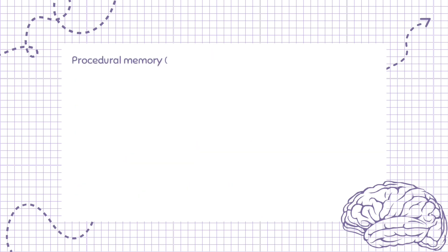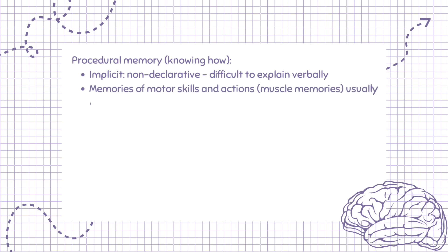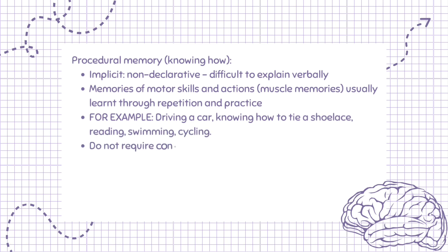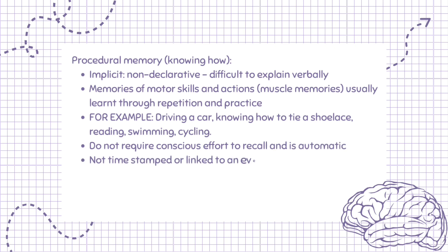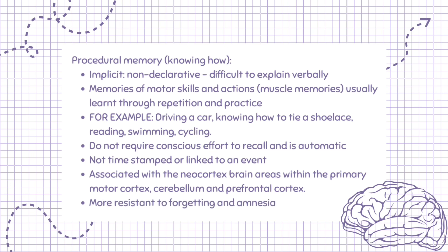Procedural memory — knowing how. Implicit, non-declarative, difficult to explain verbally. Memories of motor skills and actions — muscle memories — usually learnt through repetition and practice. For example: driving a car, knowing how to tie a shoelace, reading, swimming, cycling. Does not require conscious effort to recall and is automatic. Not time-stamped or linked to an event. Associated with the neocortex, primary motor cortex, cerebellum, and prefrontal cortex. More resistant to forgetting and amnesia.